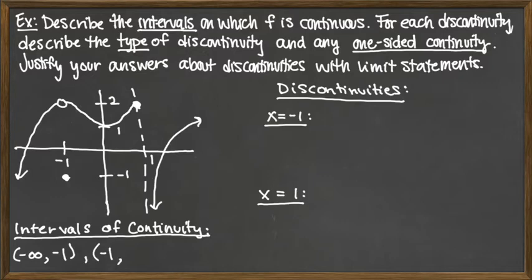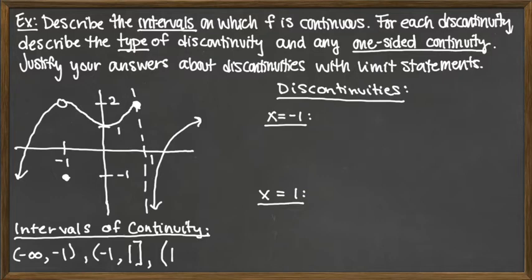As we continue on, the next interesting point is at x equals 1. At x equals 1, the solid dot is attached to the left-hand side, so we include that 1 in the interval as the right-hand endpoint — the function is left continuous up to that right-hand endpoint. Then the last interval starting back at 1 does not include 1, because at x equals 1 we're not right continuous, so that left-hand endpoint cannot be included, and we continue to positive infinity. So we have three intervals of continuity — I put commas between them instead of unions, since these are three independent intervals on which the function is continuous.